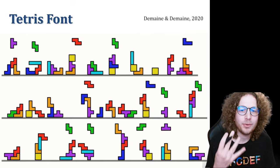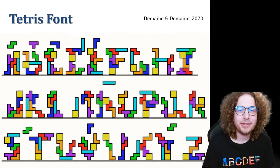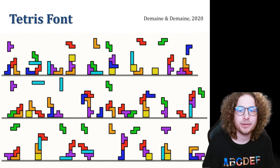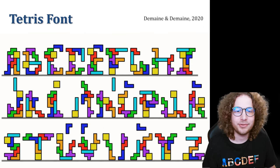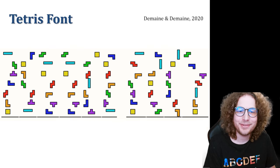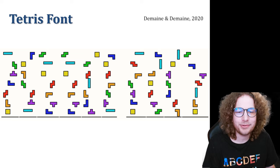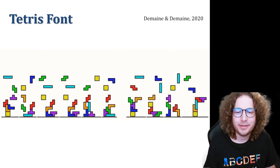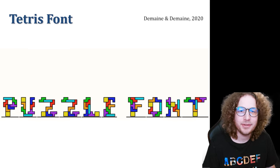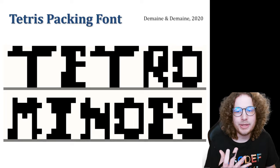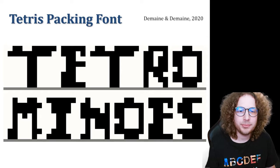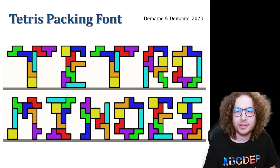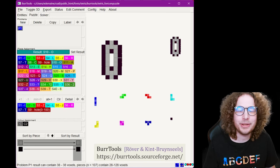Each letter is made out of exactly one copy of each of the seven Tetris pieces. The letters are designed so that you can do this falling animation — each piece can be placed while resting on the floor or on previous pieces, stacking up according to Tetris gravity. This is a challenging constraint along with the tiling constraint and looking like letters. Here's a fun puzzle font where there's no rotations — you just drop all the pieces and imagine what it will say. In this case it says 'puzzle font.'